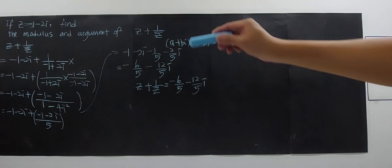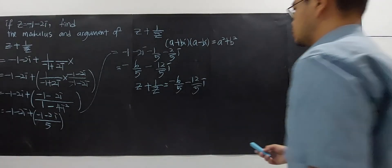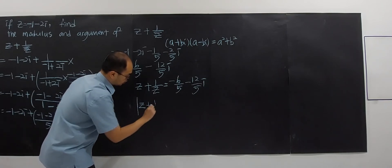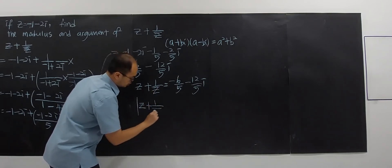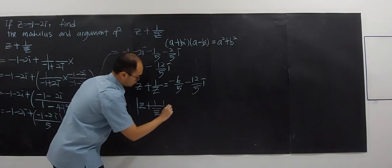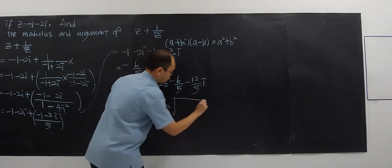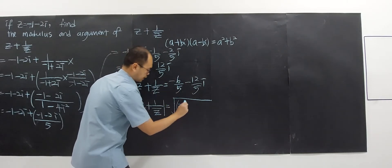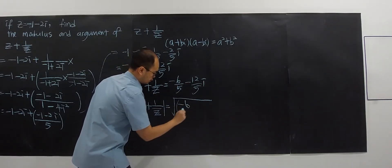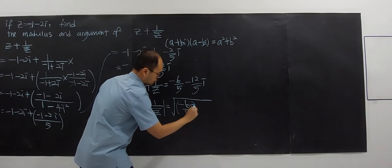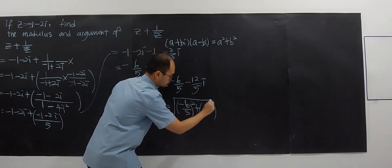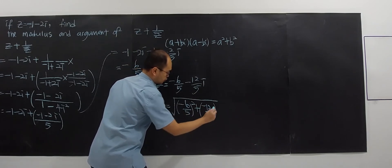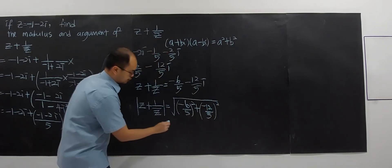Now let's find the modulus. The modulus of Z plus 1 over bar Z is found using the square root formula. We take the square root of a squared plus b squared: the square root of negative 6 over 5 squared, plus negative 12 over 5 squared.